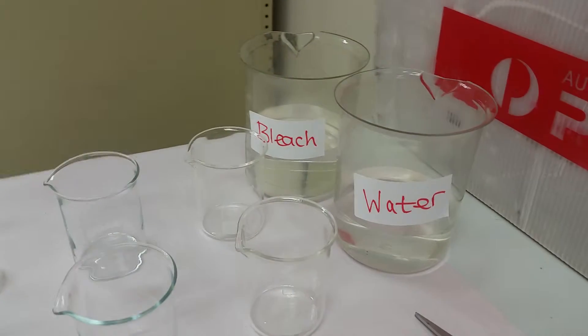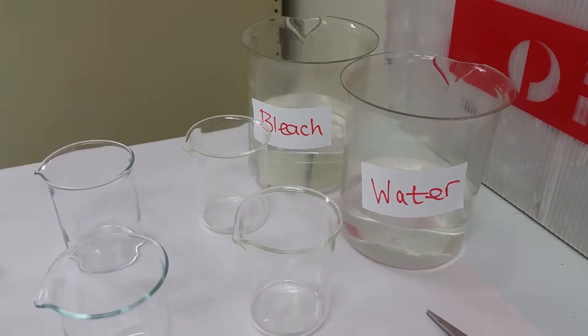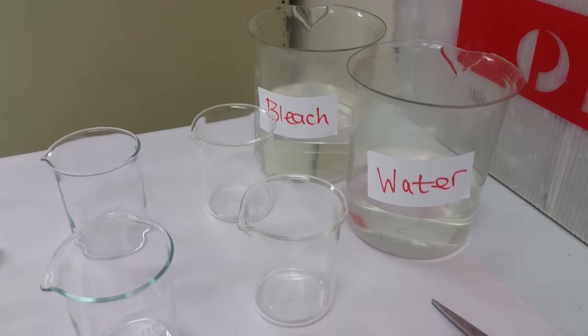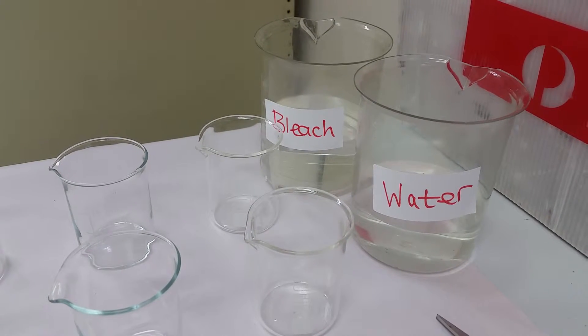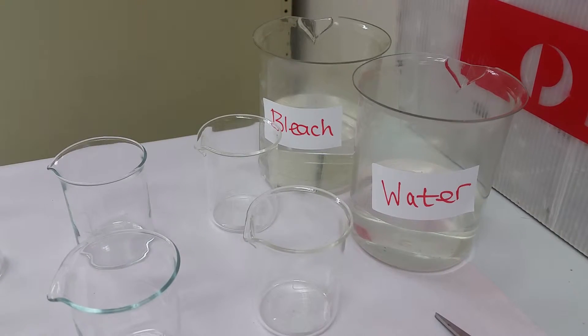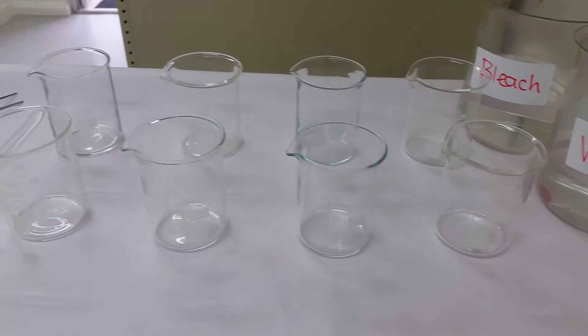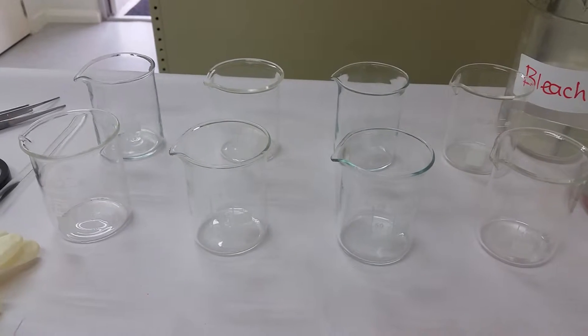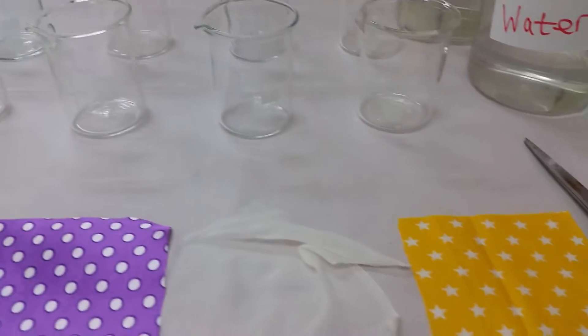In this experiment, we want to test the effect that bleach has on fabric. I've selected two beakers—one with bleach, one with water. I've also got eight containers or beakers and four pieces of material that are all the same size, even though it doesn't look like it.